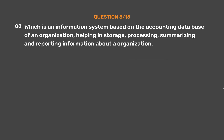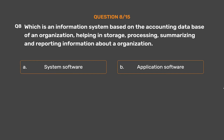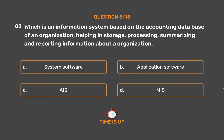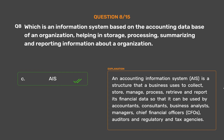Question No. 8. Which is an information system based on the accounting database of an organization, helping in storage, processing, summarizing and reporting information about an organization? Option A: System Software. Option B: Application Software. Option C: AIS. Option D: MIS. The correct answer is Option C — AIS, an Accounting Information System. AIS is a structure that a business uses to collect, store, manage, process, retrieve and report its financial data so that it can be used by accountants, consultants, business analysts, managers, chief financial officers (CFOs), auditors, and regulatory and tax agencies.